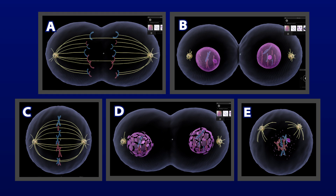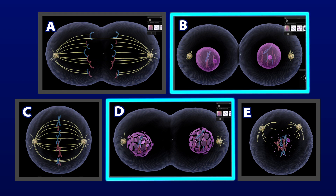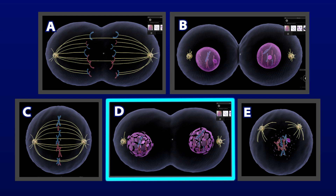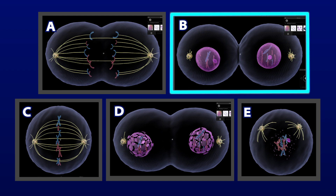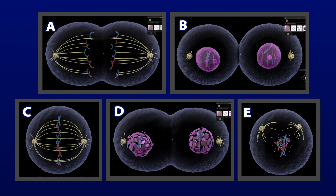Last, we'd have telophase and cytokinesis. In telophase, the cell will develop a second nucleus — you can think telophase two. Then during cytokinesis, the membrane will pinch in and separate the cell into two.